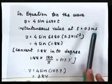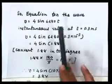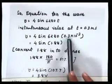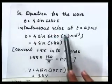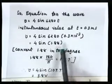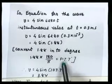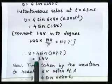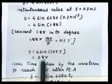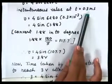The instantaneous induced EMF equation is v = 4 sin(6280t). To find the instantaneous value at t = 0.3 millisecond, put t = 0.3 × 10⁻³ into the equation: v = 4 sin(6280 × 0.3 × 10⁻³) = 4 sin(1.88). Since 1.88 is in radian, convert to degree by multiplying by 180/π — the angle is 107.7°. So v = 4 sin(107.7°) = 3.8 volt.